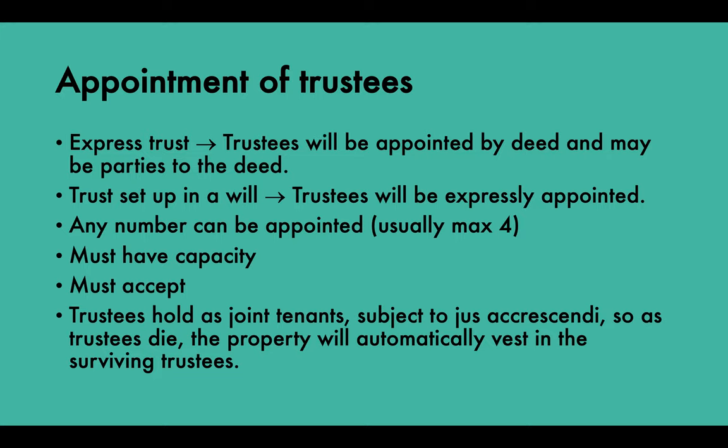Any number of trustees can be appointed but usually it's a maximum of four. If there are more than four trustees it gets a little complicated. There is no restriction upon the number of trustees, but it is inconvenient to have too many. Under the Trustee Act 1925 section 34, the number of trustees of land is restricted to four, with the most important exception being land vested in trustees for charitable, ecclesiastical or public purposes.